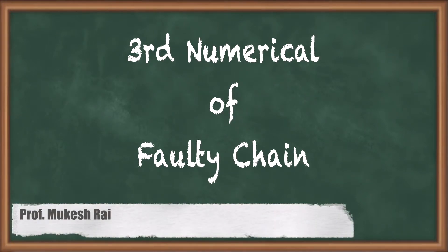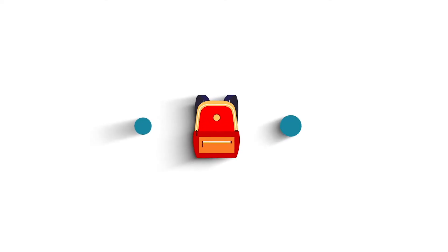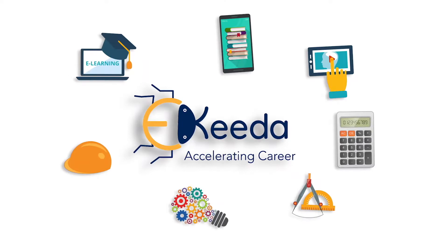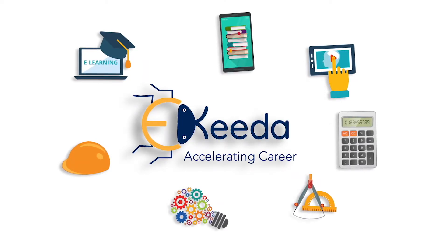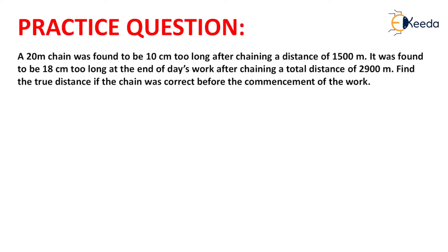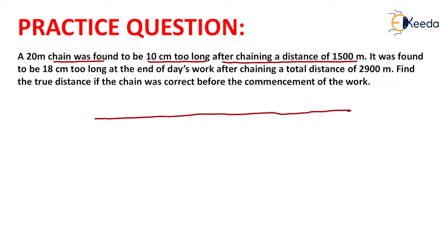Hello students, today we are going to solve the third numerical of a faulty chain question. A 20-meter chain was found to be 10 centimeters too long after chaining a distance of 1500 meters. This means that when we measure a distance of 1500 meters starting from zero, the chain was found to be 10 centimeters too long. At the initial phase, the chain was correct and had zero centimeter extension.